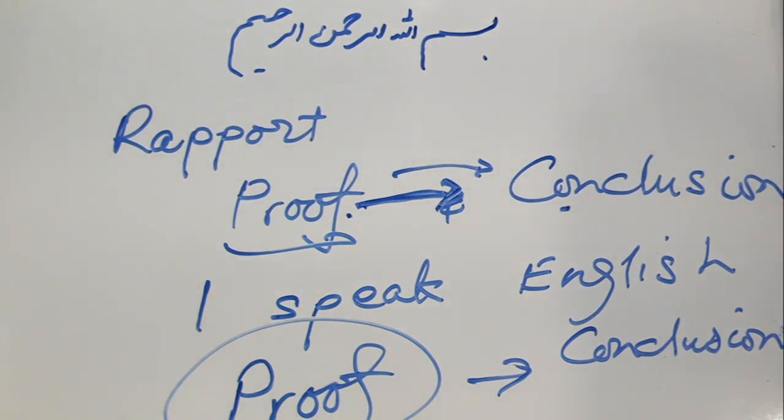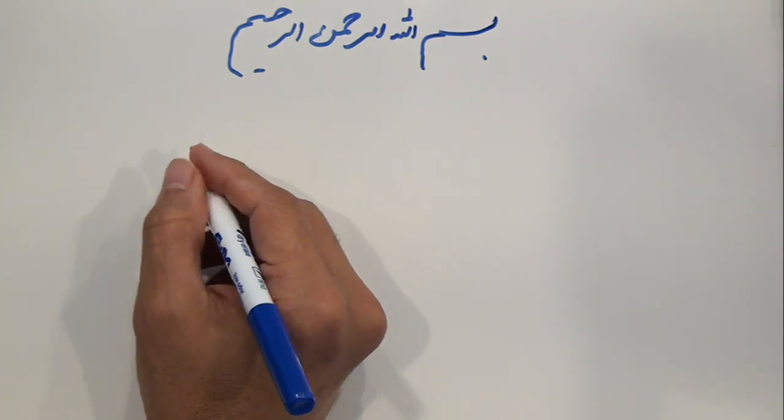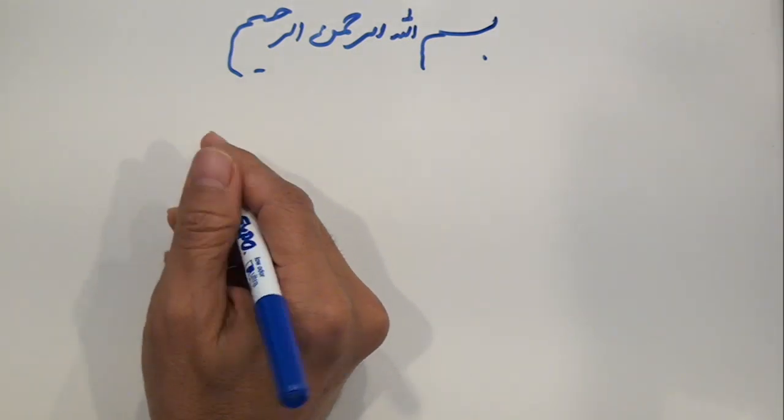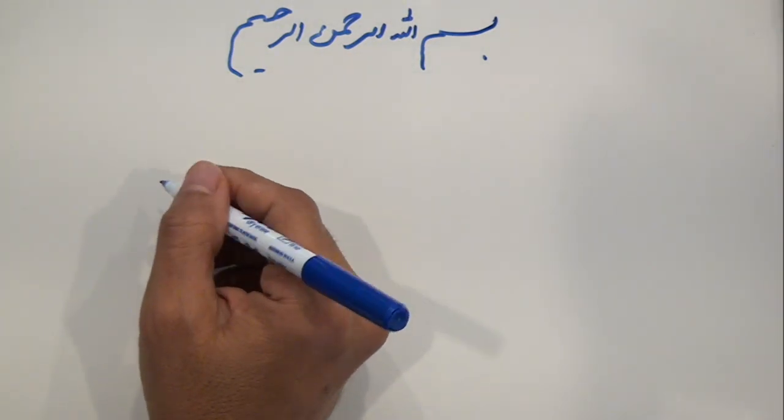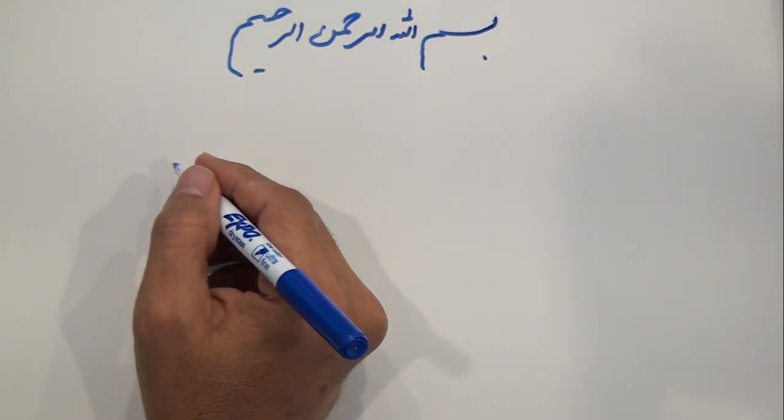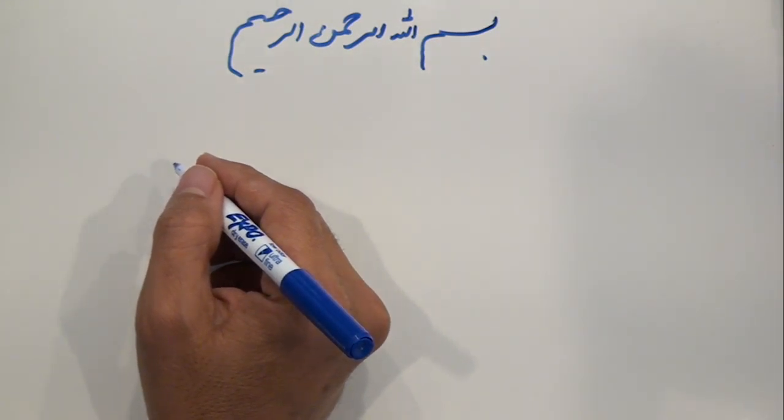So this would be our third proof with regard to the rejection of the Umari claim that the imam of Abu Bakr proves his succession to the Nabi sallallahu alayhi wa'alihi wa sallam. Wa sallallahu ala sayyidina Muhammad wa'alihi al-tahirin.